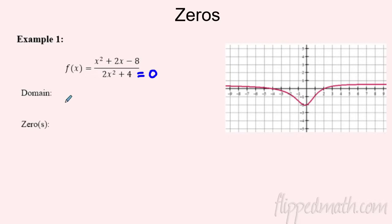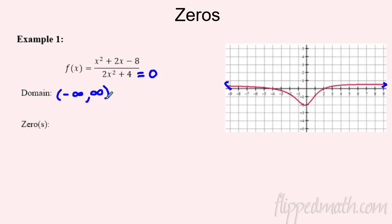I went ahead and graphed this for you. You can see it goes on forever this way and forever this way — the domain is all real numbers, from negative infinity to infinity. Why? Because anything you square is positive, add four and it's still positive — the bottom can never equal zero. So domain is not an issue here.